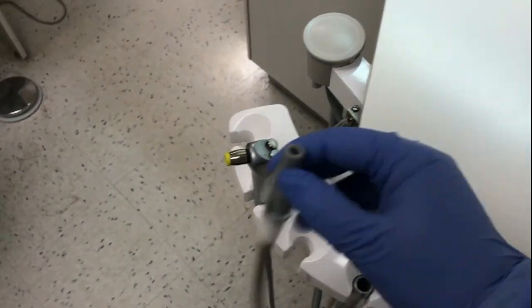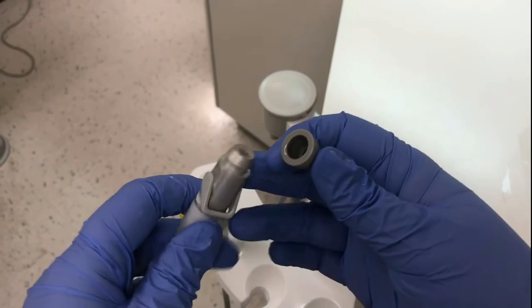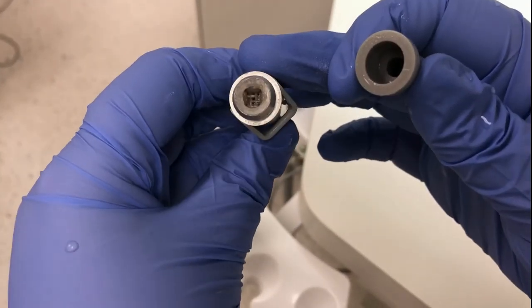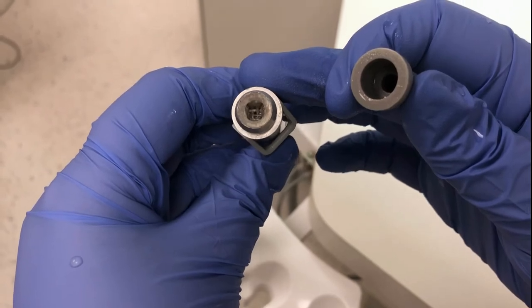Pull off the gray silicone cap to check the saliva ejector trap. If the holes are still visible, you don't need to change the trap.